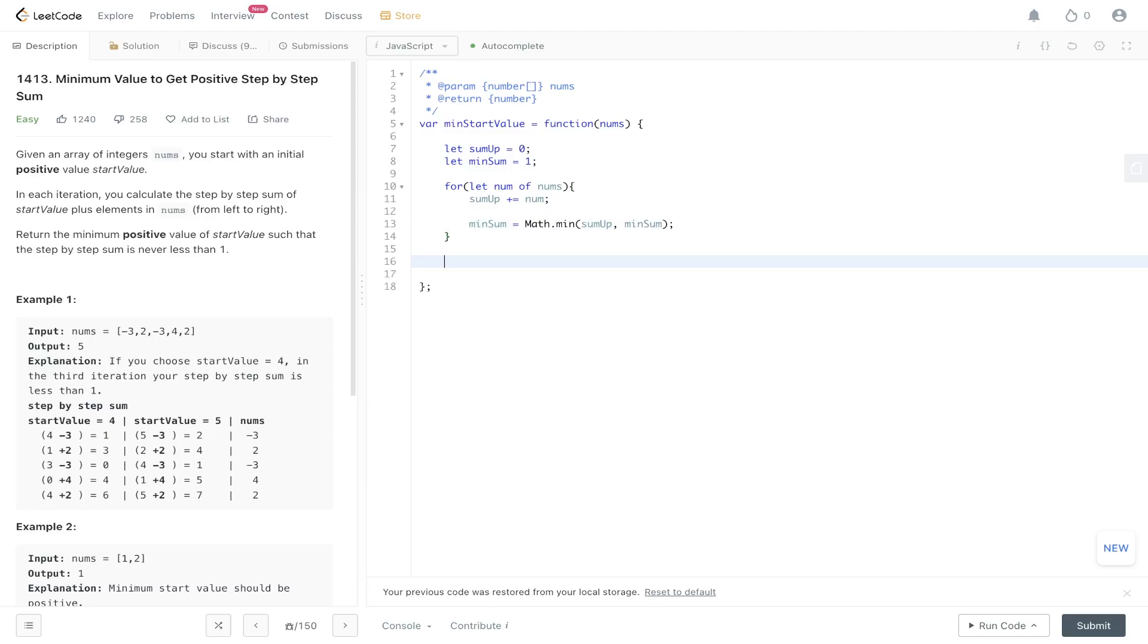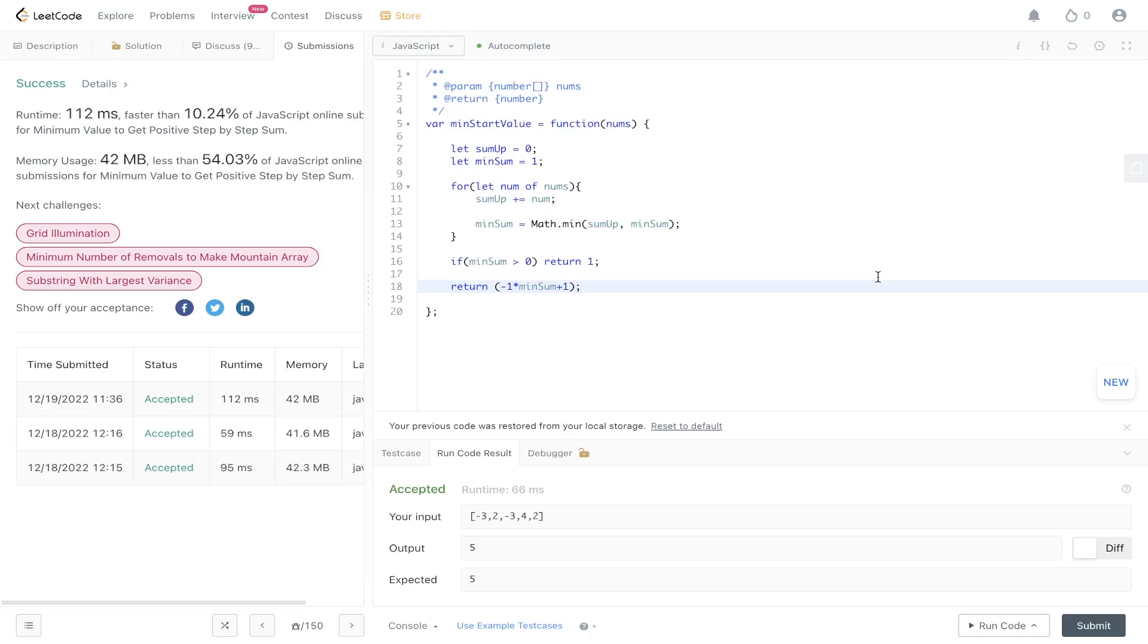Once this executes, minimum sum is either updated or it's not. If minSum is greater than zero or equal to one, we return one. Otherwise, we return -1 times the minimum sum plus one. That gives us the solution we're looking for. Let's run this and submit it. And there you go.